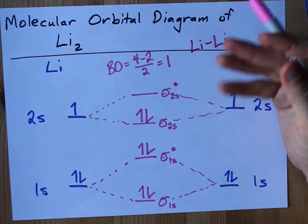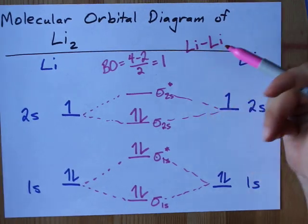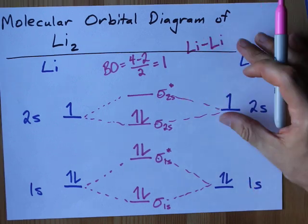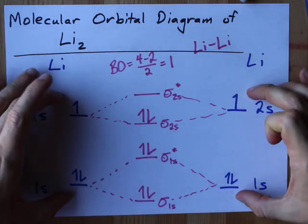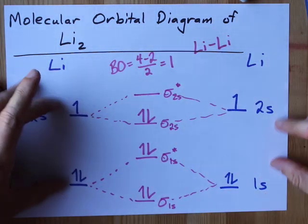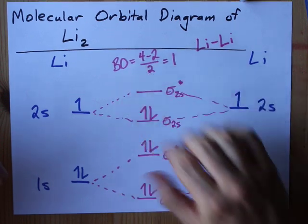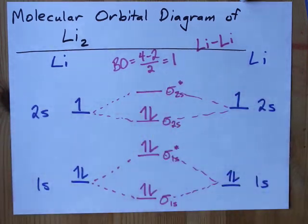I wouldn't call it a covalent bond because these are metals. You could probably call it a metallic bond of some kind. But that's not what you're here for. You're here for the molecular orbital diagram, which I have done for you. And done well, might I add. Best of luck to you in your journeys.